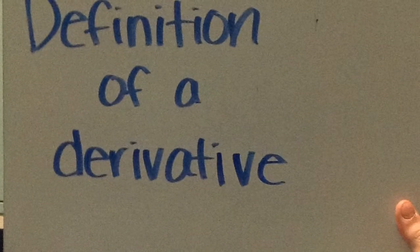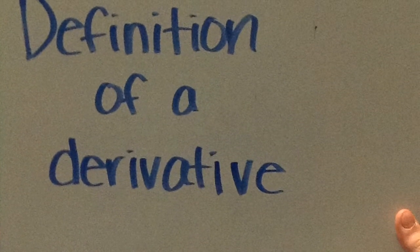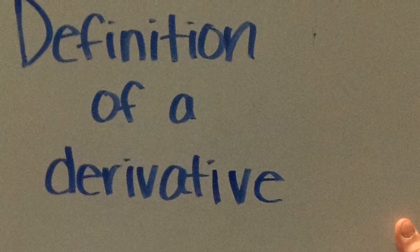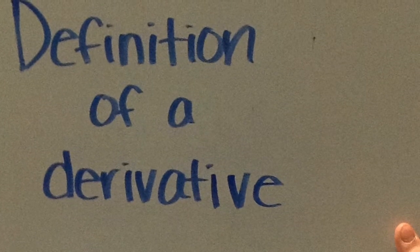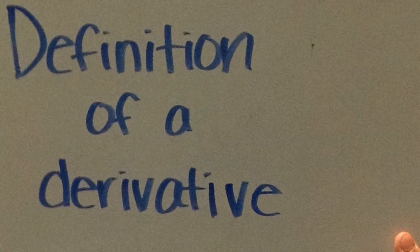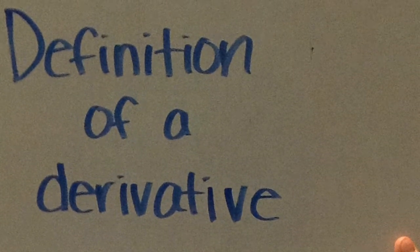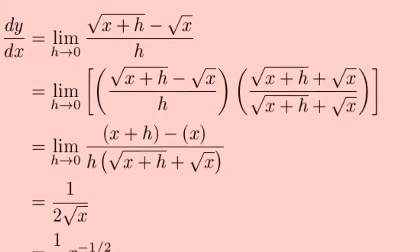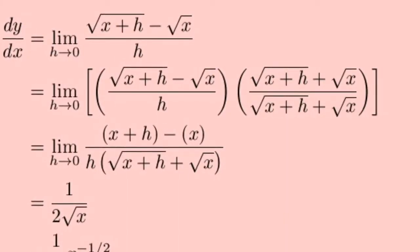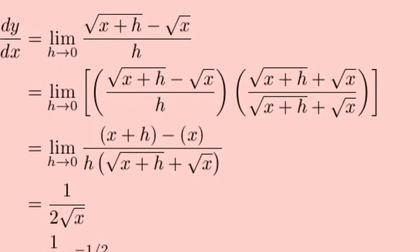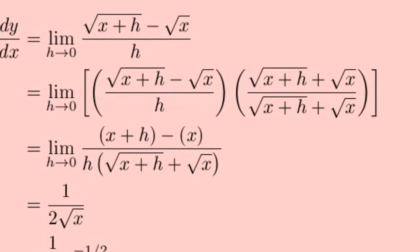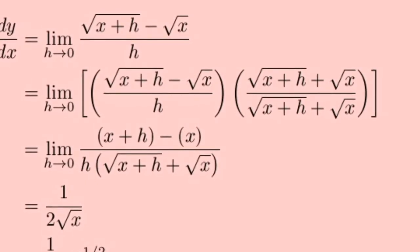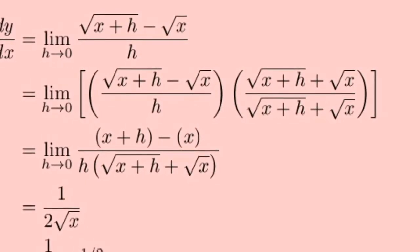You should be able to find a derivative by finding the limit of a difference quotient. You should also know the relationship between differentiability and continuity — that is, if a function is differentiable at a point, it's continuous there, but if a function is continuous at a point, it's not necessarily differentiable there.